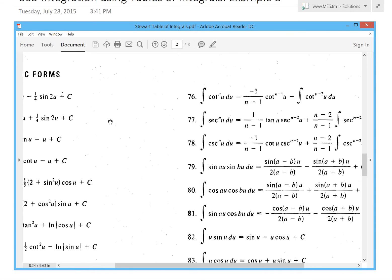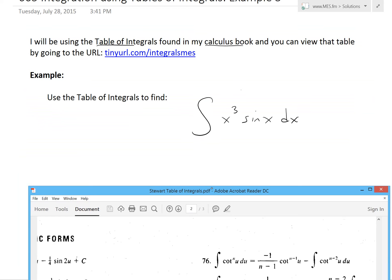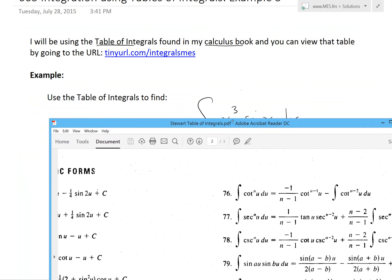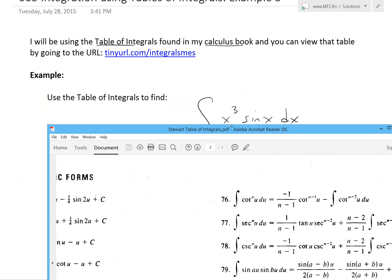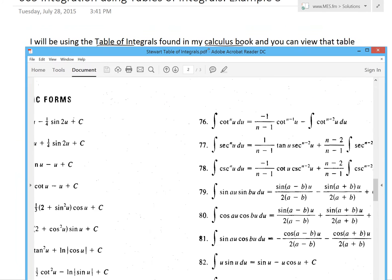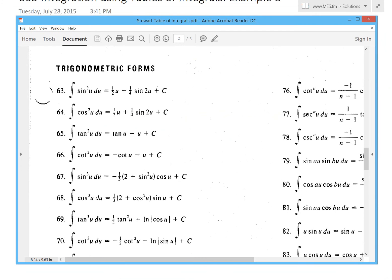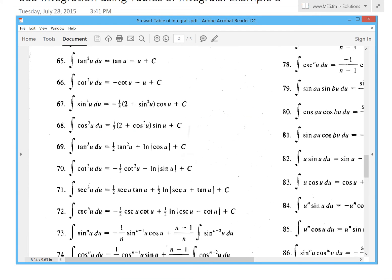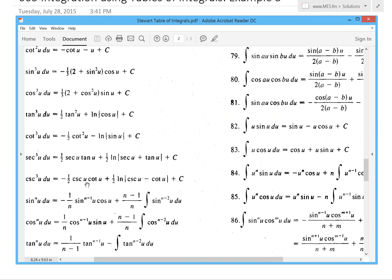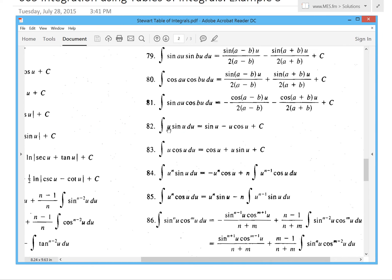For ours, we're looking for one that basically has an x³ or u³ in this case. So basically x³ times sin(x). If we look over here at these, we don't see any x³—I mean, any u³ right here.